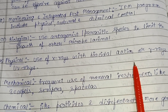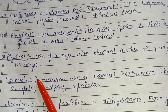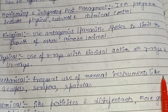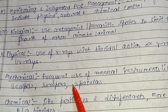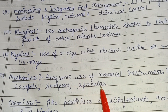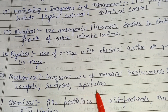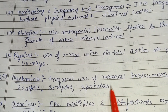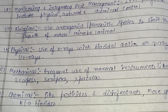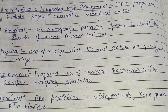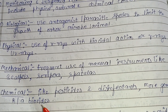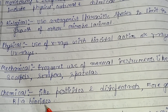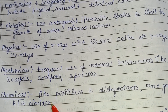The physical method uses X-rays with biocidal action, or gamma rays and UV rays, to kill bio deterioration agents. The mechanical method involves frequent use of manual instruments like scalpels, scrapers, and spatulas — for example, scraping termites off wood and then applying chemicals to control them. Chemical methods use pesticides and disinfectants, more generally known as biocides — agents that kill living organisms causing bio deterioration or harm to a particular source.